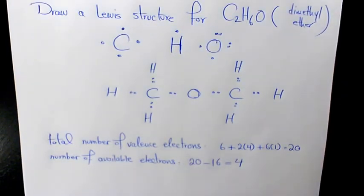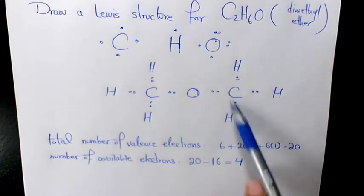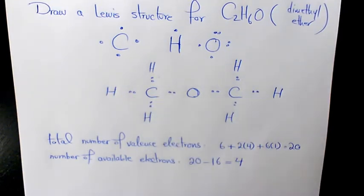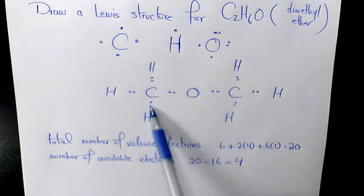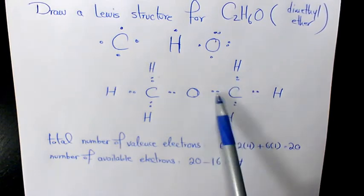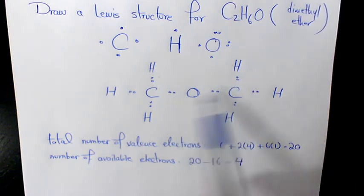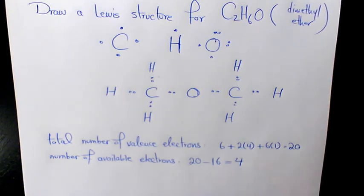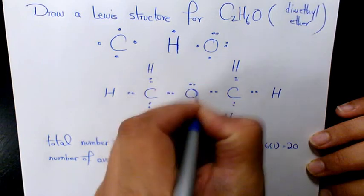For any Lewis structure we need to know that hydrogen has to follow the duet rule, meaning it has to have two electrons — as you see, all of them follow the duet rule. Any other element has to follow the octet rule, meaning it has to have eight electrons. Carbon has two four six eight here, and two four six eight here, but oxygen only has four, so we need four more electrons, which gives us two lone pairs.